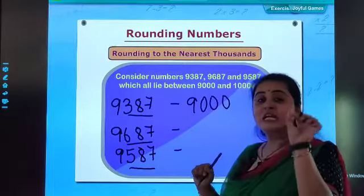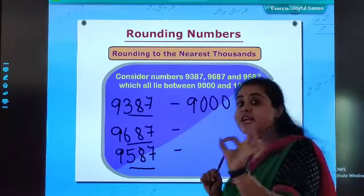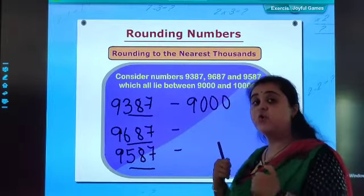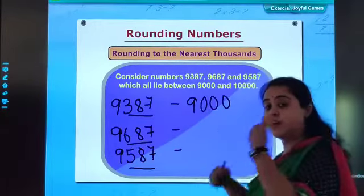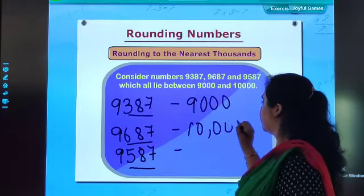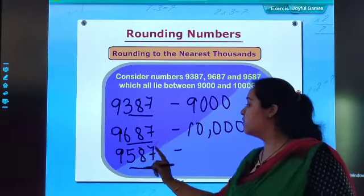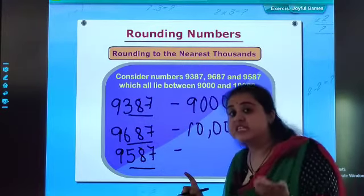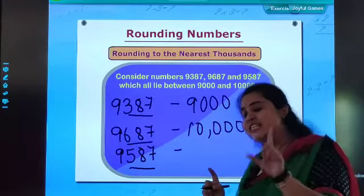The second one is 9,687. 687 is greater than 500, so we will be rounding up. That means, in 9,000, this will convert to 10,000. Now, the last number is 9,587. 587 is greater than 500, so it will be rounded up to 10,000. Very good.